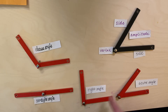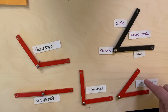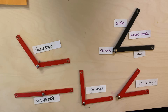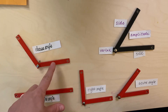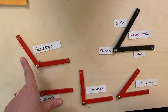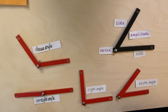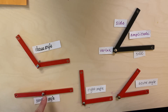Our right angle makes a perfect L or corner of a square or rectangle. An acute angle's amplitude is smaller than a right angle. An obtuse angle's amplitude is bigger than a right angle. And a straight angle is when the two sides come together at the vertex and make a straight line.